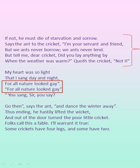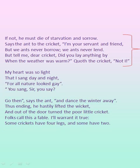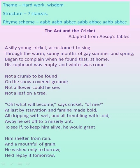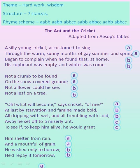The line in the penultimate stanza, 'For all nature looked gay,' comes only once in the poem. The poem has 7 stanzas and the rhyme scheme is as follows: AABB, AABB, AABBCC, AABB, AABBCC.